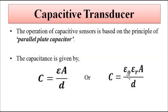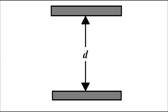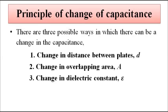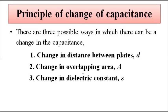Here, ε₀ is the absolute permittivity (permittivity of free space), εᵣ is the relative permittivity, A is the overlapping area, and d is the distance of separation. Any change in capacitance can be brought about by changing three things: first, the separation distance between the plates; second, the overlapping area — the portion of each plate which lies directly above the other; and finally, the permittivity or dielectric constant.